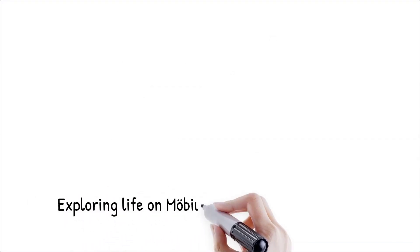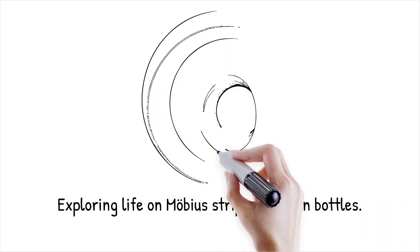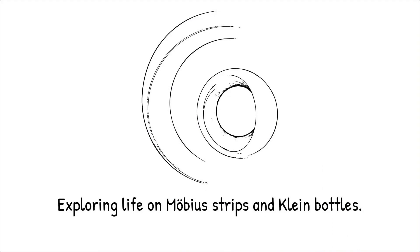Möbius strips and Klein bottles are examples of manifolds with unusual connectivity. These surfaces defy conventional orientation, creating continuous loops where creatures might evolve traits for navigating these seamless environments.